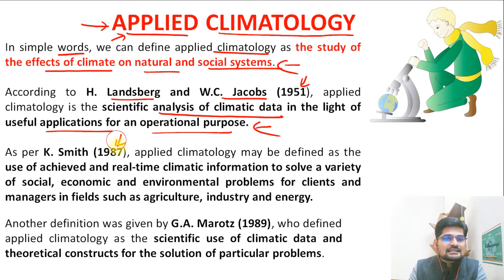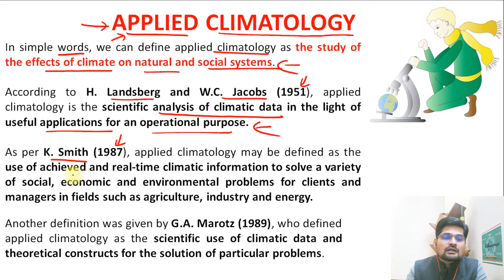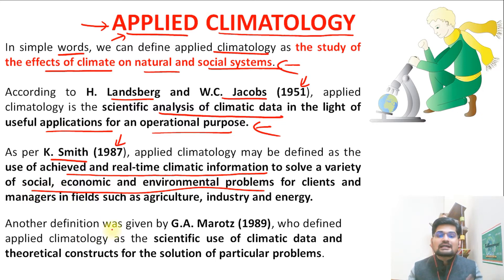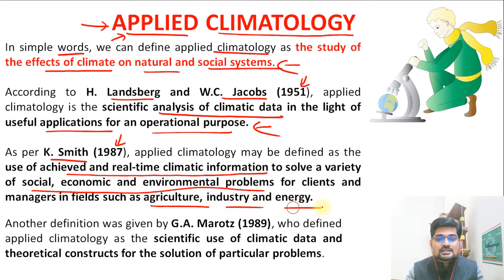Then in 1987, K. Smith defined it again. It is basically the use of achieved and real-time climatic information to solve a variety of social, economic and environmental problems for clients, for people, for managers in the field of agriculture, industry and energy. So this is basically a utility-based definition.